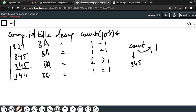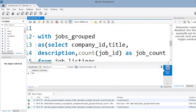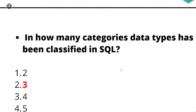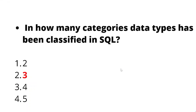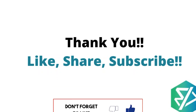This was the solution to this question — I hope you've understood it. If you have any doubts or alternate solutions, put them in the comment section. The answer to our quiz question — how many categories have data types been classified in SQL — is three: character, numeric, and boolean. Thank you for watching; if you liked the video, share it with your friends and subscribe to our channel.